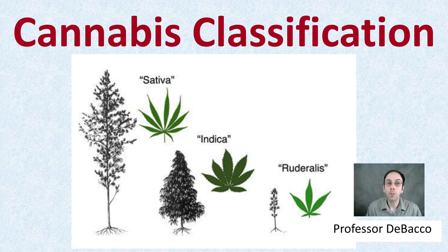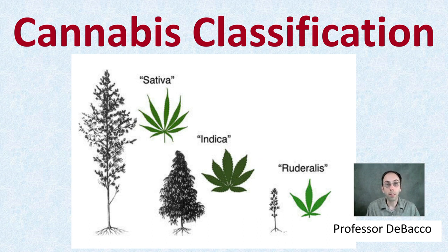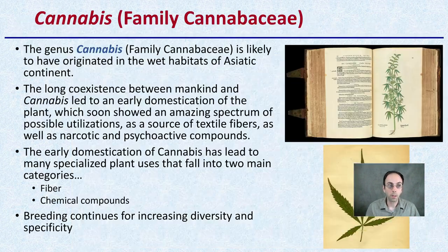Welcome to another DeBaco University video. Here we're going to be looking at cannabis classification. These three terms you might be familiar with: sativa, indica, and ruderalis. We're going to define them and look at them in a little bit more detail here.